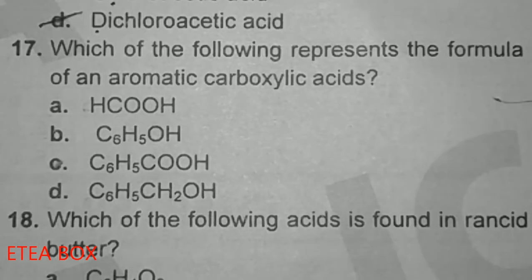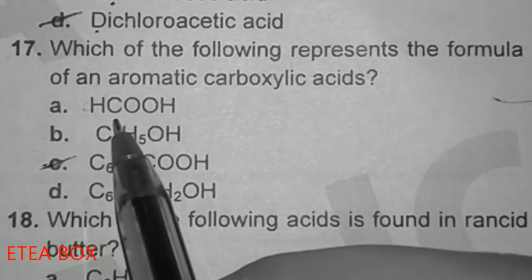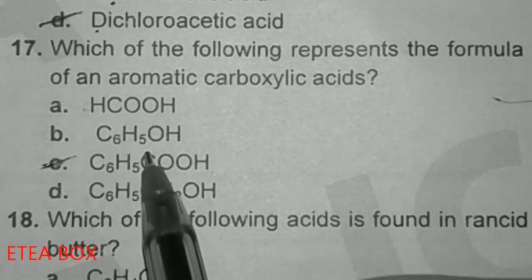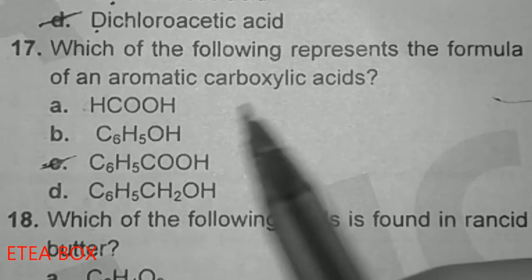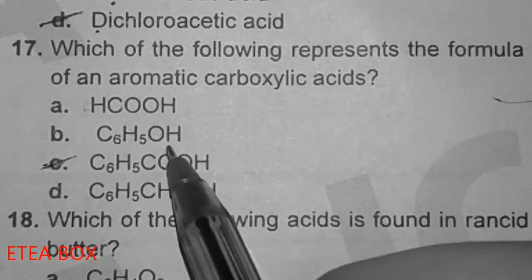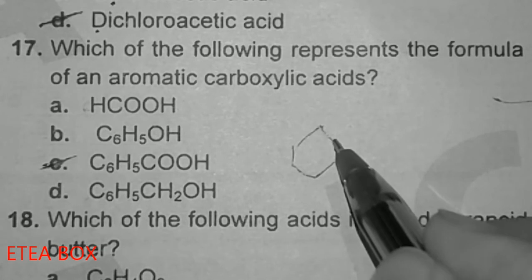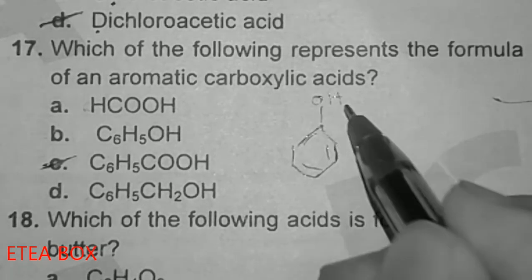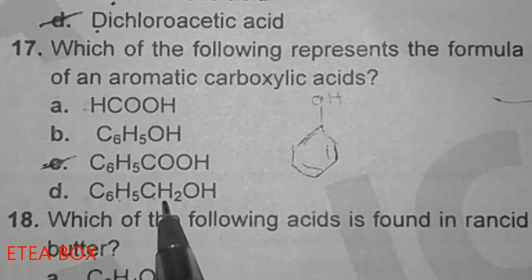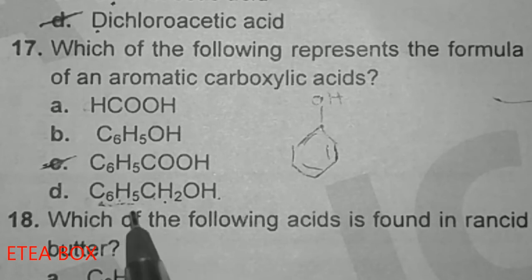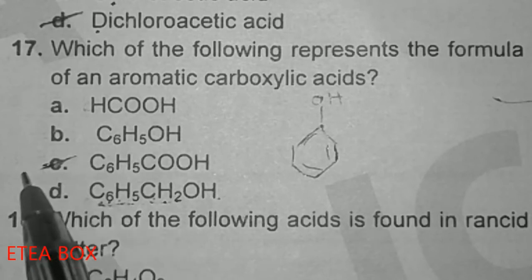Each of the following — which represents the formula of an aromatic carboxylic acid? Option C is the aromatic carboxylic acid. One option is aliphatic. Another is alcohol since the OH group is not directly attached to the benzene ring — it is attached to a CH₂ group. Another is phenol since the OH group is directly attached to the benzene ring. So the aromatic carboxylic acid is option C.